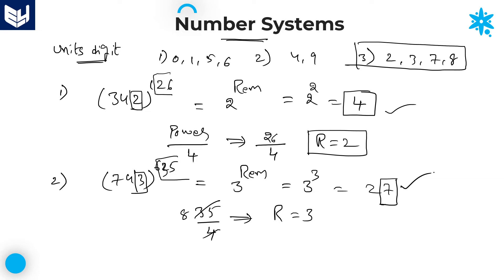The required units place digit for the number 743 to the power of 635 is 7. That is the answer.